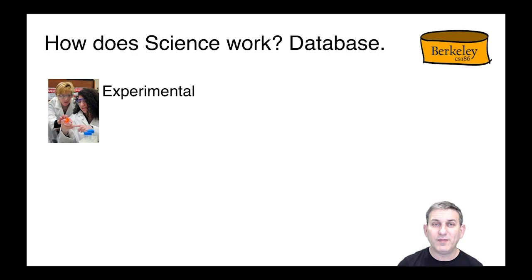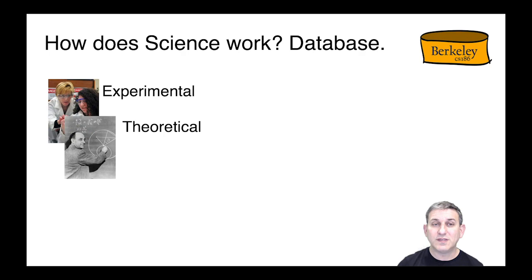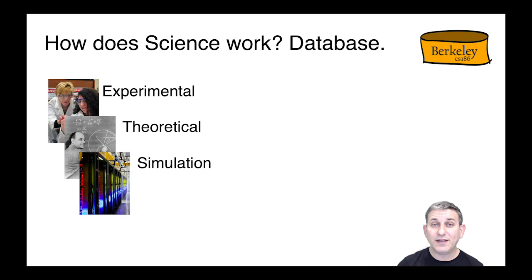Late in his life, Gray became involved in work on what he called e-science, or more famously the fourth paradigm of science. He said the first paradigm was experimental — interacting with the real world and seeing what happens. Theoretical science was the second paradigm, using mathematical modeling. In the 20th century we had a third paradigm: simulation, using lots of computers and a model to predict what is happening in the physical world.